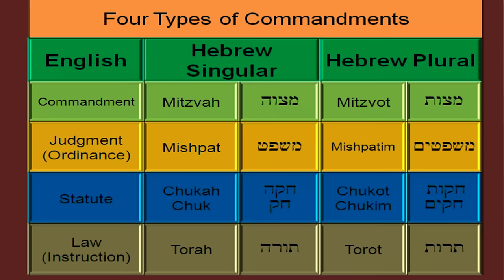Then you have mishpat and mishpatim. The statute is a chuk — masculine or feminine in Hebrew, so it's chuk or chukim or chukot. And then instruction: Torah really isn't best translated as 'law' — it's instruction. Torah means instruction. The plural is torot. In 2 Timothy 3:16, all scripture is given by inspiration of God and proper for instruction. The New Testament is Torah. It's instruction.